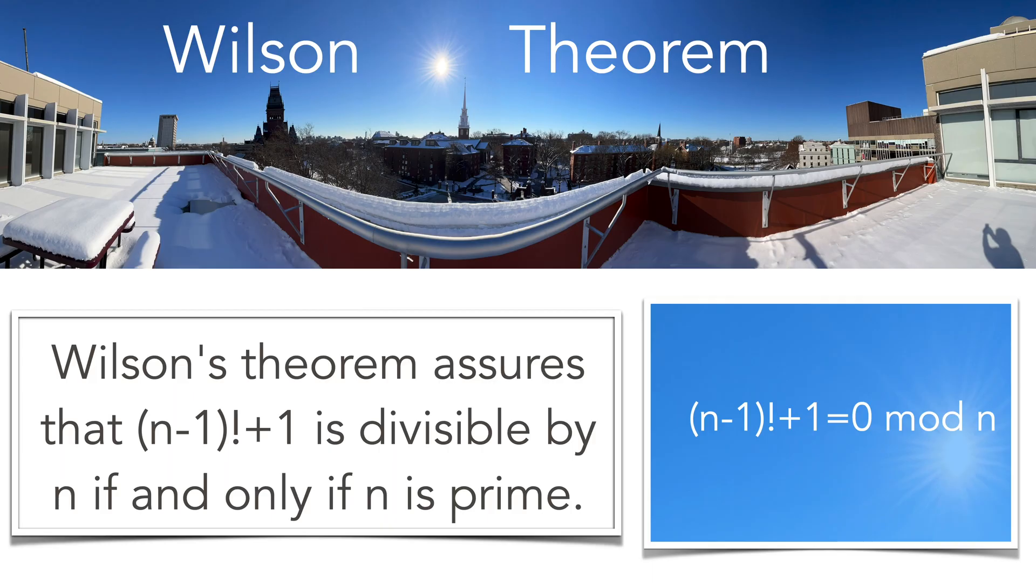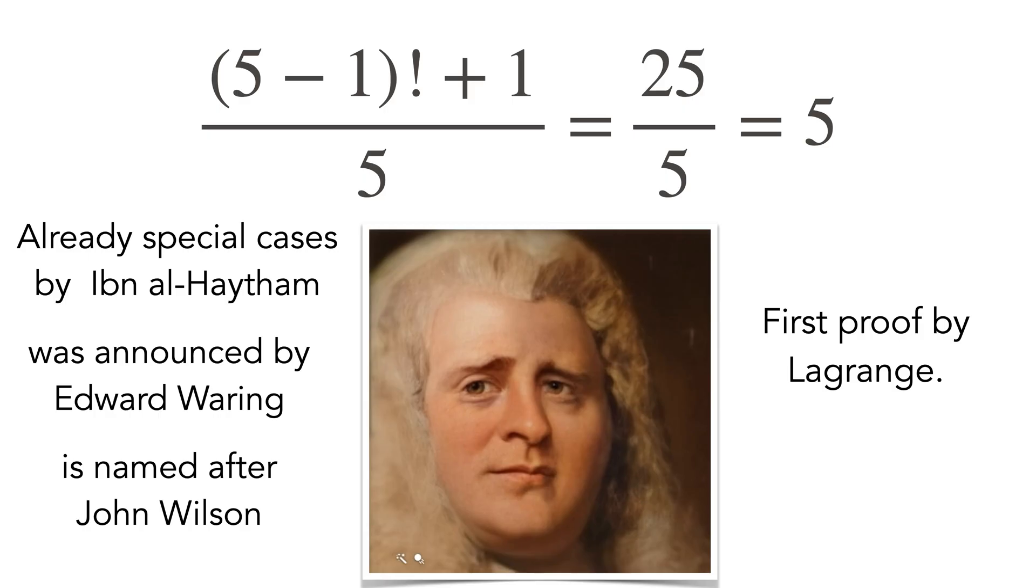Wilson's theorem characterizes prime numbers through a single congruence that tells that the number n minus 1 factorial plus 1 is divisible by n if and only if n is prime. So for example for n equal to 5 we have 4 factorial plus 1 is divisible by 5 and indeed 5 is prime.